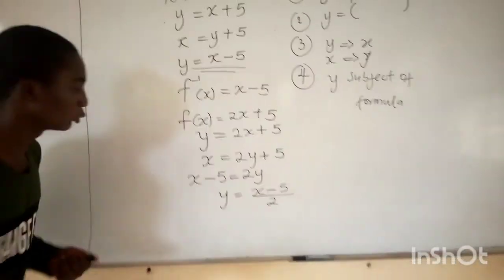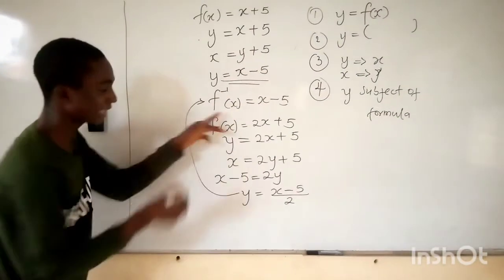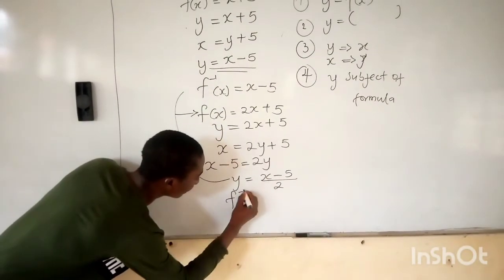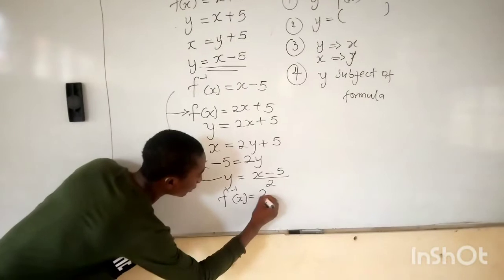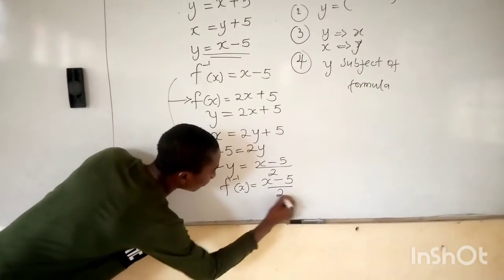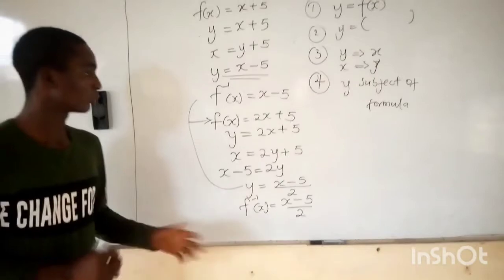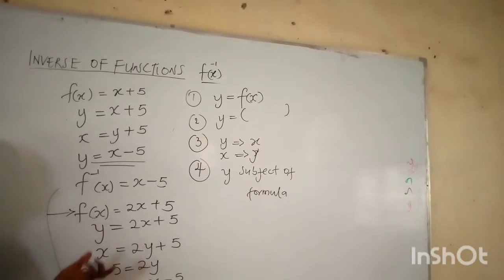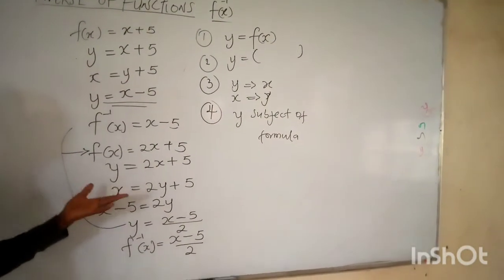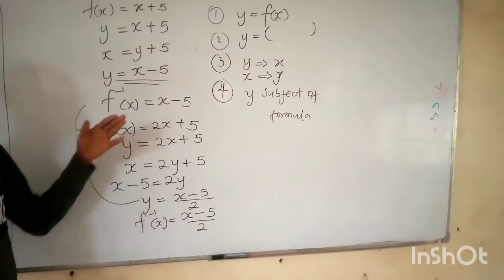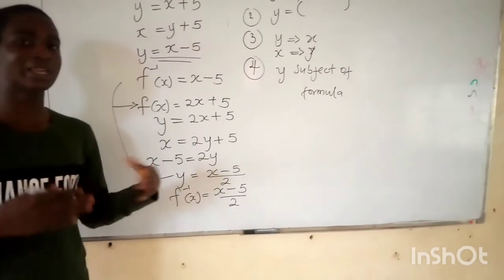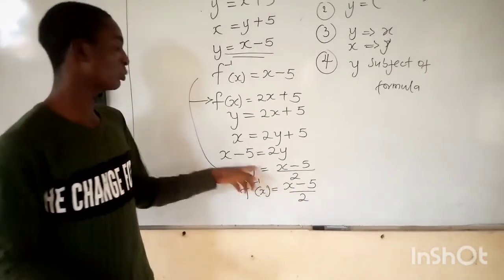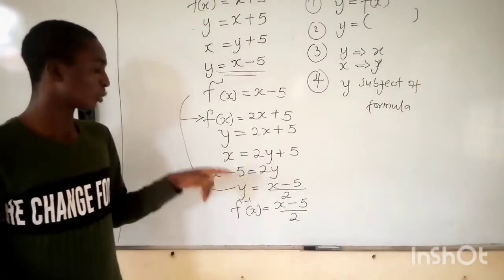So the inverse of this function is equal to (x minus 5) over 2. Don't forget: first, replace f(x) with y. Then interchange x and y — anywhere you see y, put x, and anywhere you see x, put y. Then make y subject of formula. When you make y the subject of formula, you get the inverse of that equation.